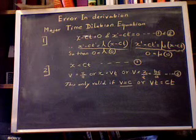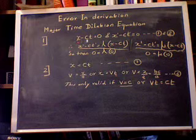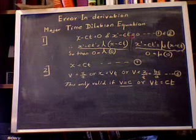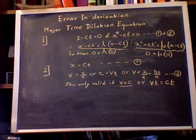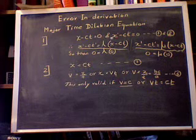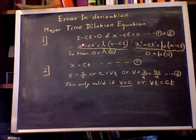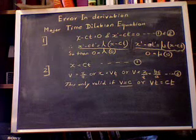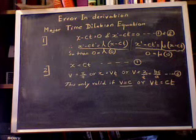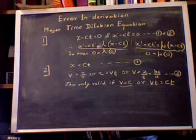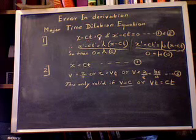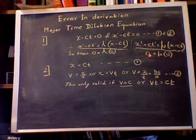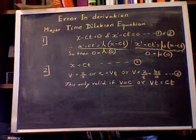Here we have his first equation in the derivation: x minus ct equals zero, and x prime minus c and t prime equals zero. This is of course the moving frame, and the velocity between these two is v, as in Victor. He then goes on to take gamma as well as mu as proportionate quotients. If you consider that x minus ct equals zero, then obviously zero equals gamma into zero, and again zero equals mu into zero, which doesn't sound logical.